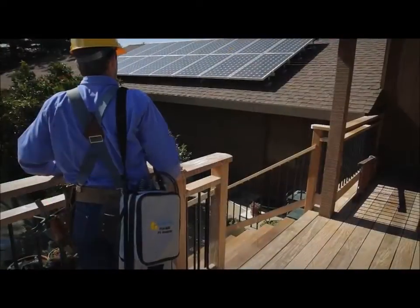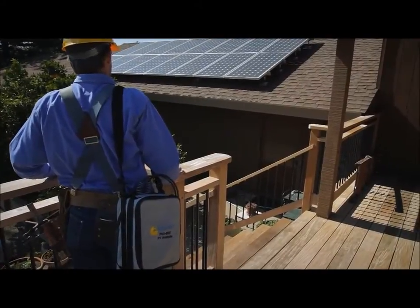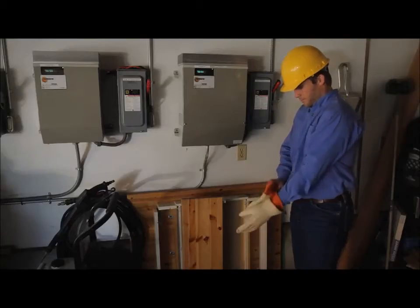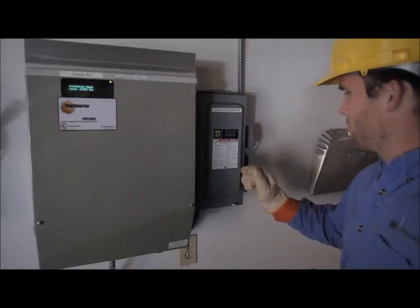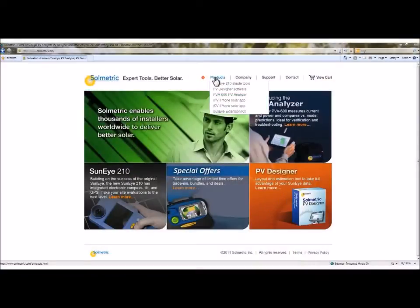In residential installations, the PV Analyzer can be connected to a string once the string has been isolated from the inverter, normally by opening the DC disconnect. A video training series available at the Solmetric website provides details on proper operation of the PV Analyzer.